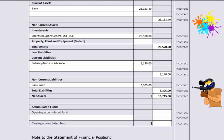Almost there — the opening accumulated fund figure comes from the additional information, as did the opening bank balance figure. The information below the opening accumulated fund will depend on whether Pete's Paintballing Club has a surplus or deficit this year. If the club has a surplus, you will select plus surplus for the year from the drop-down menu; otherwise, you will select minus deficit for the year.